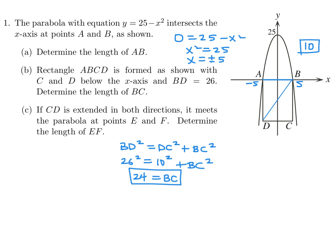Basically what they're saying is you have to extend this line, and then it touches the parabola. We'll call this one E and this one F. What we're trying to figure out is the coordinates — but the y-coordinate I already know, because it's the top-to-bottom distance from B to C, which is 24. But be careful, because it's minus 24, since it's below the x-axis. So we already know the y-coordinate is minus 24.